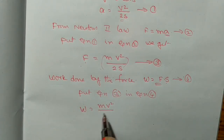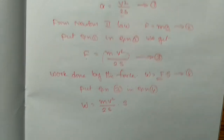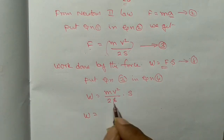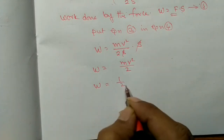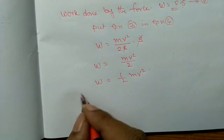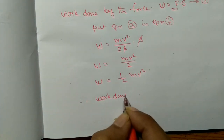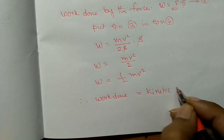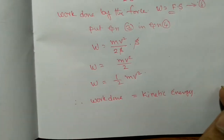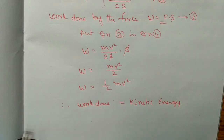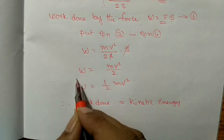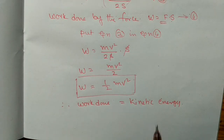Substituting equation 3 into equation 4: W equals mV squared by 2S multiplied by S. The S terms cancel, giving W equals mV squared by 2, which can be written as W equals half mV squared. Therefore, work done equals kinetic energy, and the expression for kinetic energy is one-half mV squared.